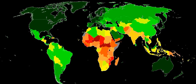The first index was launched in 1990, and the only year without a Human Development Report since 1990 was 2012. The latest index, covering 189 countries, was launched on 14 September 2018.